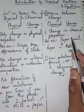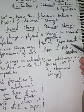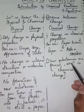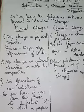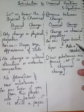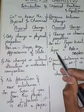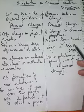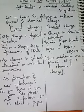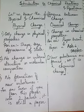Chemical change involves changes in chemical properties. For example, when you burn paper it turns into ash and smoke. Here, new substances are formed — that is why it is called a chemical change. From paper we got ash and smoke; before burning, we did not have ash and smoke. So in a chemical change, new substances are formed.